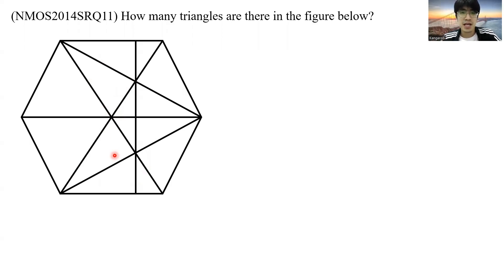Now, one way is that we count these triangles according to their sizes. So how many triangles are there consisting of just one small triangle, like this? And how many triangles consisting of two small triangles, like this?